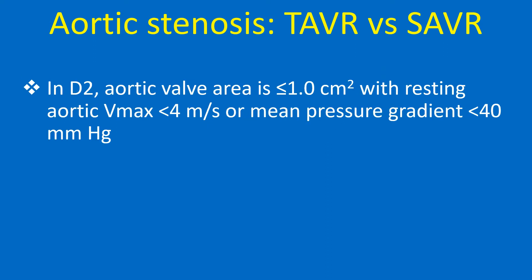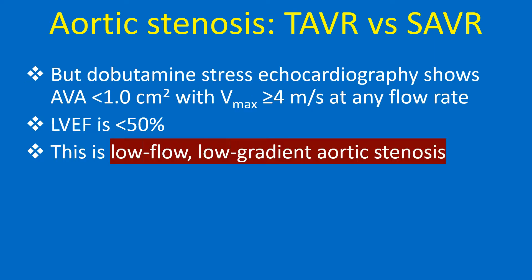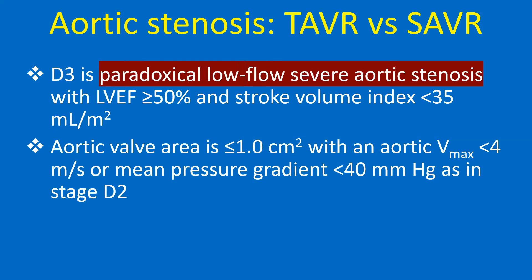In D2, aortic valve area less than or equal to 1 square cm with resting aortic Vmax less than 4 m per second or mean pressure gradient less than 40 mmHg, but dobutamine stress echocardiography shows aortic valve area less than 1 square cm with Vmax more than or equal to 4 m per second at any flow rate. In D3, aortic valve area less than or equal to 1 square cm with aortic Vmax less than 4 m per second.